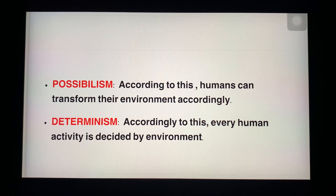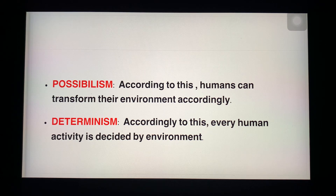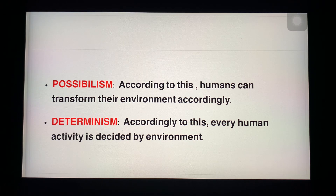Determinism — according to this, every human activity is decided by the environment. For example, the best example is natural disasters like floods, tsunamis, and earthquakes. These are determinism — the environment uses its force and dominant power over human activity. And when we equally divide or connect both these terms, a new term is formed: neodeterminism, where there is a middle path between human and environment.